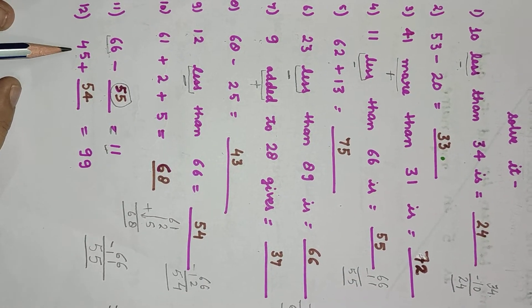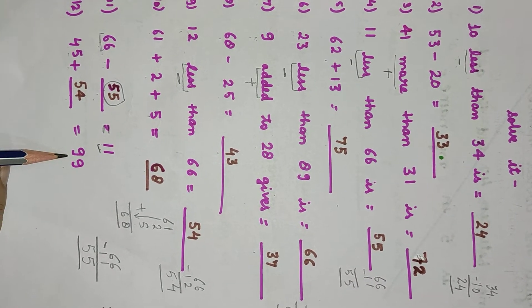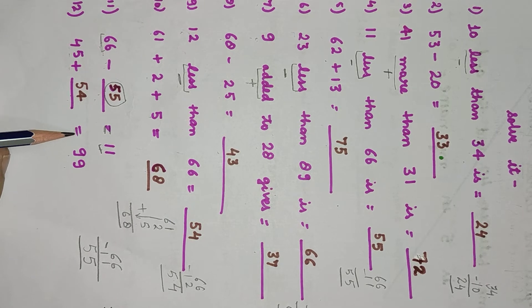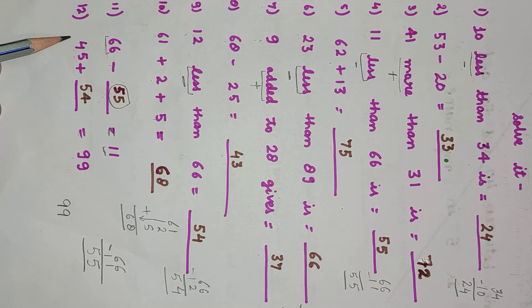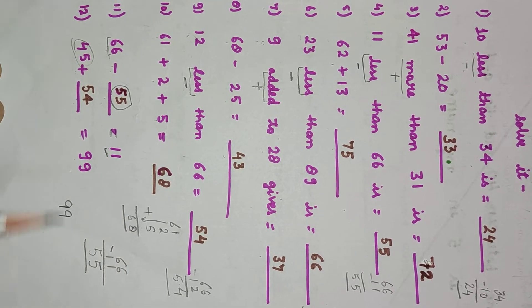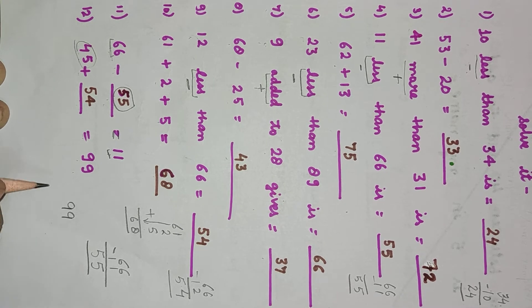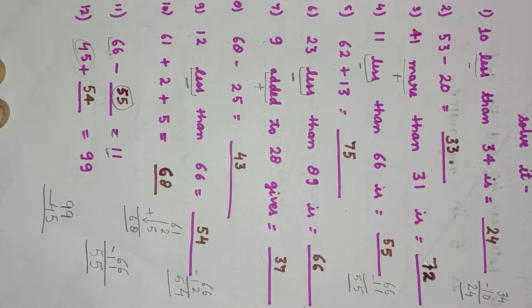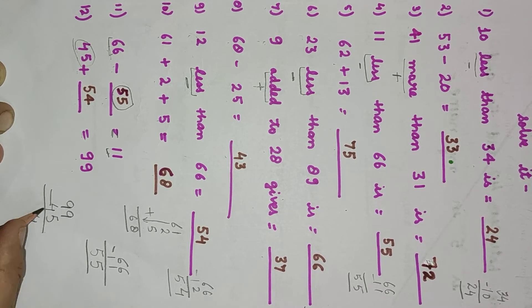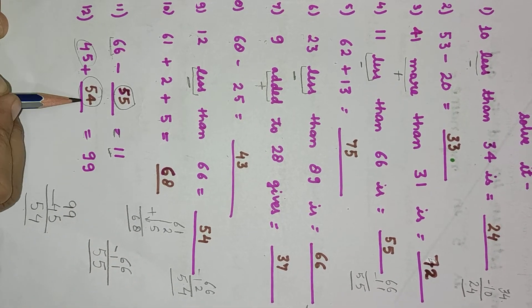Next: 45 plus dash equals 99. What do we add to 45 to get 99? We will subtract the given digit from the greatest digit. 9 minus 5 will be 4, and 9 minus 4 will be 5. We will get 54.